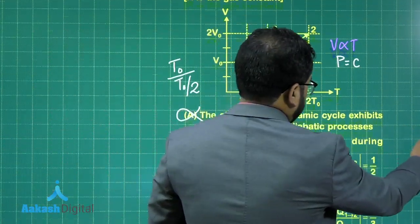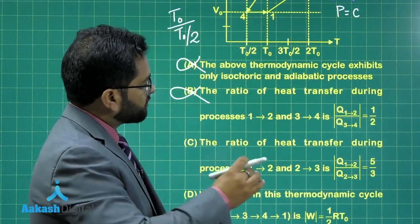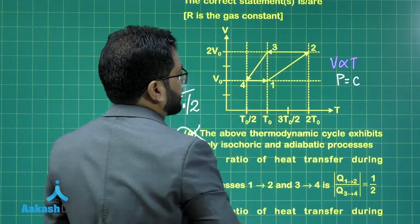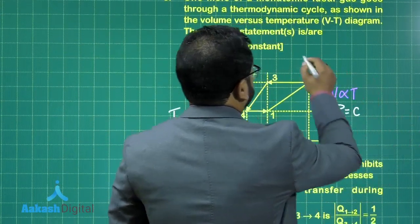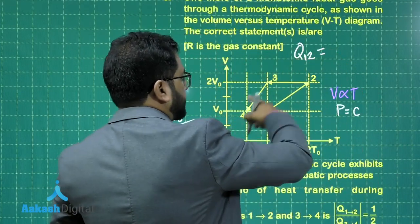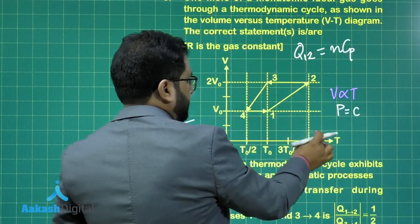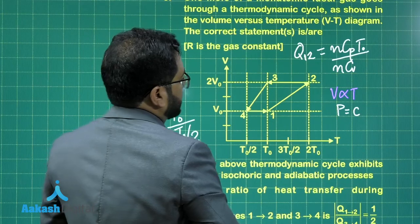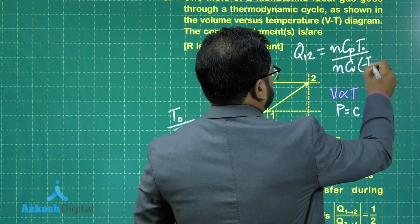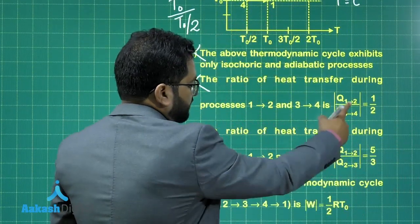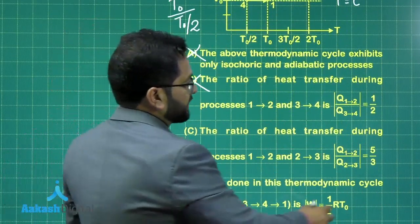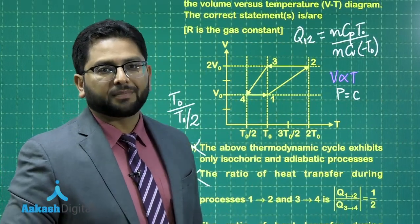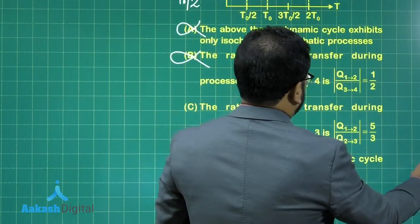Now let's find the ratio of heat transfer Q₁₂ to Q₂₃. Q₁₂ is isobaric, so that's NCP·ΔT, and ΔT is T₀. Q₂₃ is isochoric, so that's NCV·ΔT, and the change in temperature is −T₀. We need the ratio in terms of magnitude, so the negative sign does not matter. All I need to do is find the ratio CP:CV. Since it's monoatomic, CP:CV = 5:3. So option number C would be correct.